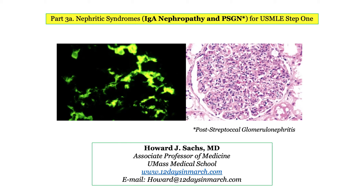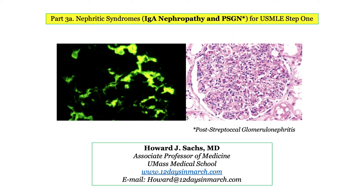Welcome back to Season 3 of 12 Days in March. In this presentation, we'll begin our discussion of the nephritic syndromes, focusing on IgA nephropathy and post-streptococcal glomerulonephritis, which pretty much travel as a pair throughout Step 1. Your answer selection will frequently come down to choosing between the two.